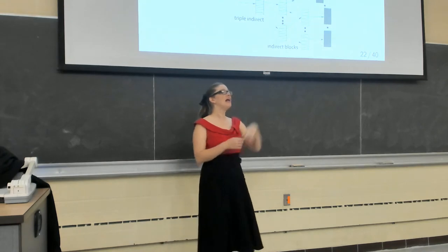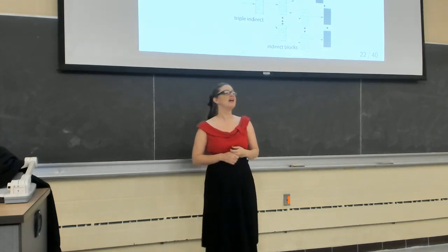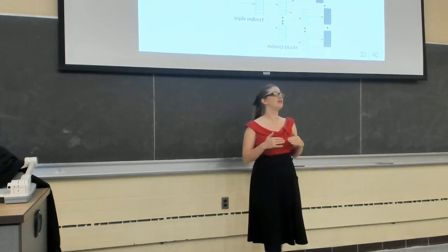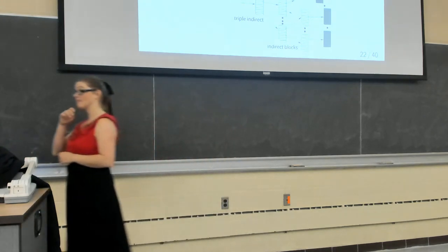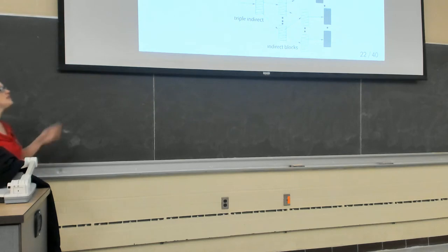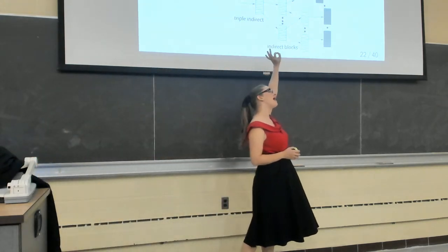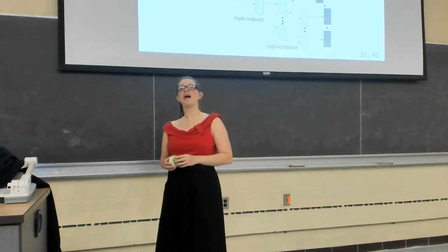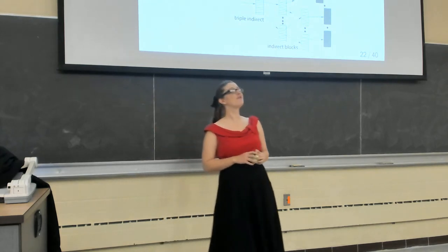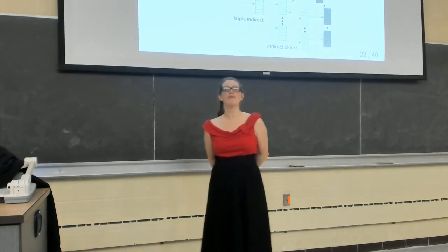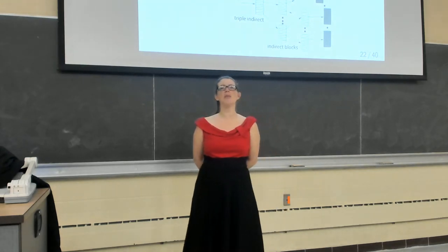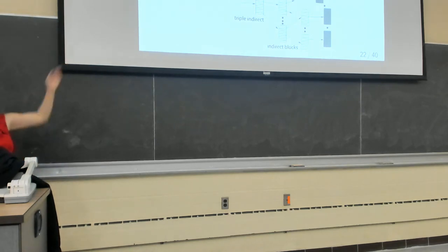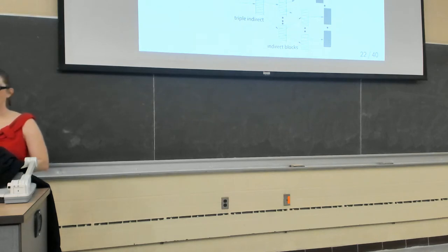You only use the triple indirect if you need it, only the double indirect if you need it — you start with the fewest levels of indirection. All of these indirect blocks are actually occupying data blocks on the disk. This is part of the reason why the file size on disk doesn't actually match the file size as you know it. If you make a file with 4 characters, you might expect 4 bytes, but on disk it looks like 4 kilobytes or more — because we don't share data blocks and we may have indirect blocks.